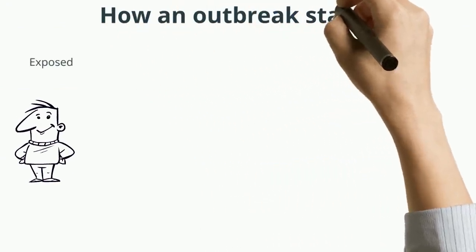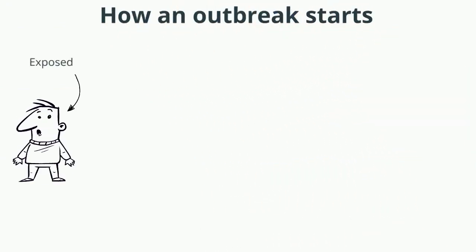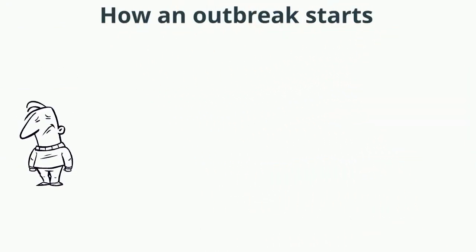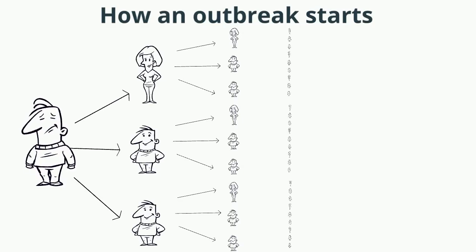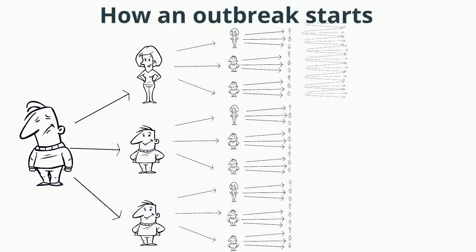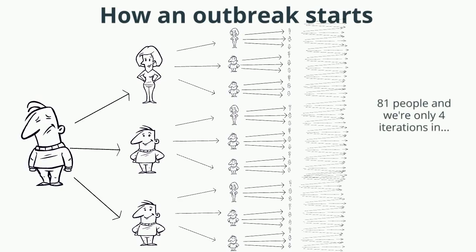This is Bob. He doesn't know it yet, but he's been exposed to the coronavirus. Because Bob feels just a little under the weather, he decides he can go out with his friends. Now they're infected, and they infect others, and those people infect other people, and so on. If every person infects just three others, after four iterations we're already at 81 people infected.